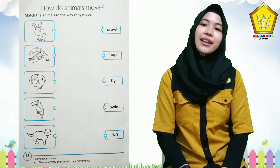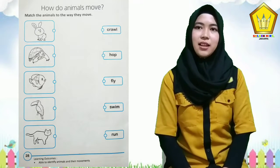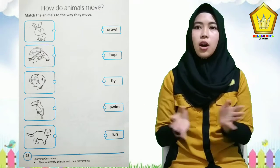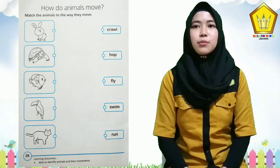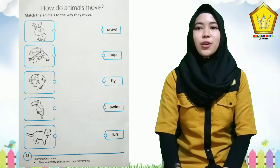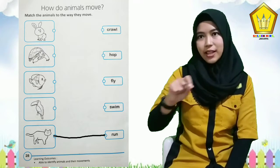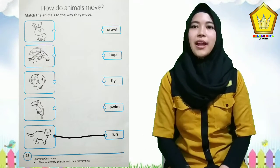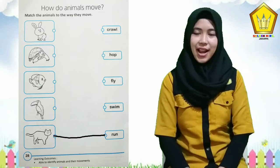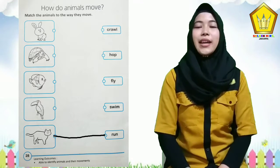And then cat — how does cat move? Cat moves with run, so you make a line to run, r-u-n, run.